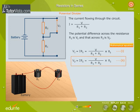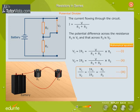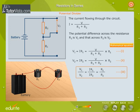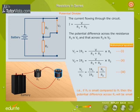V2 = I·R2 = V × R2 / (R1 + R2). This equation shows that the potential difference across a resistance is directly proportional to the resistance. That is, if R2 is small compared to R1, then the potential difference across R2 will be small.